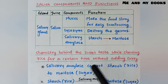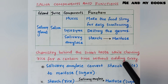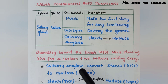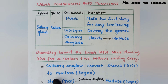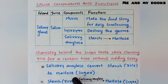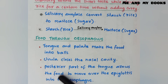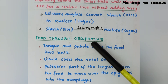What is the chemistry behind the sweet taste while chewing rice without curry? Salivary amylase enzyme converts starch present in rice to maltose. Maltose is a sugar, which is why we feel a sweet taste when chewing rice without curry. Starch in rice is converted to maltose with the help of salivary amylase enzyme.